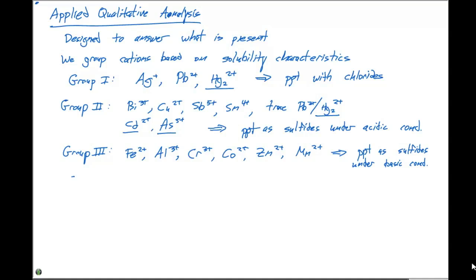Group four contains barium 2+, calcium 2+, and magnesium 2+. These three cations will precipitate with the phosphate ion.